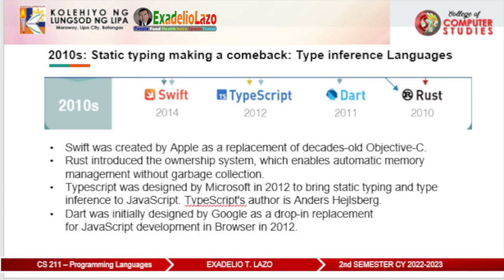The 2010s: static typing making a comeback — type inference languages. The 2010s were characterized by the comeback of statically typed languages. All four languages highlighted in the infographic — TypeScript, Rust, Dart, and Swift — supported type inference out of the box. Rust introduced the ownership system, which enables automatic memory management without garbage collection.